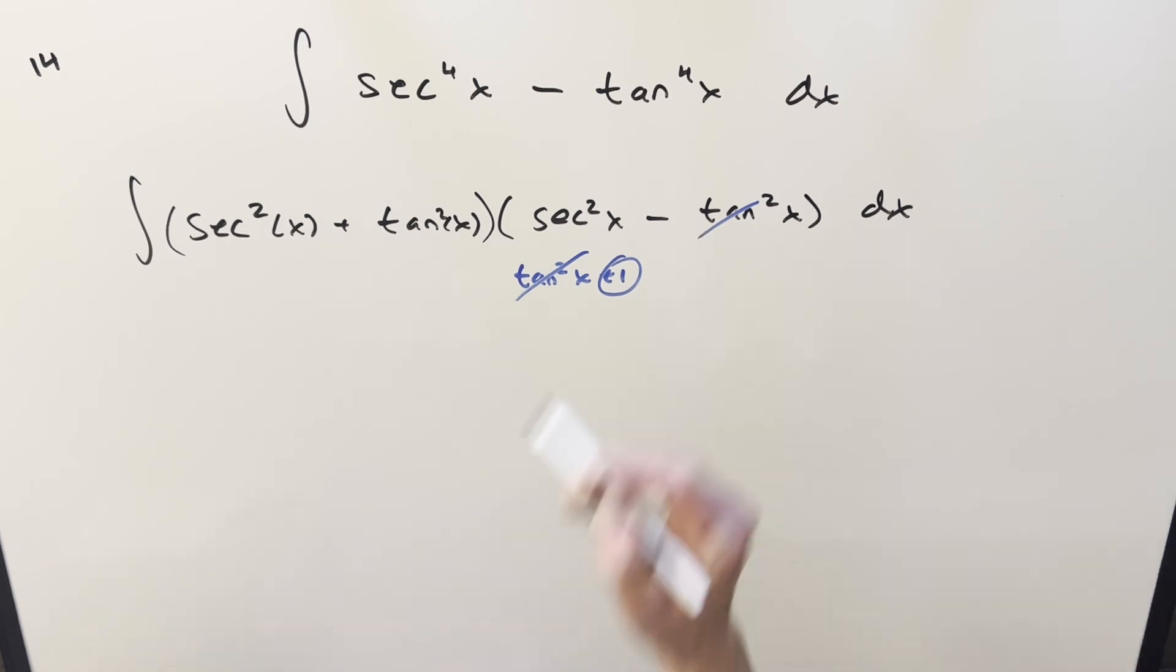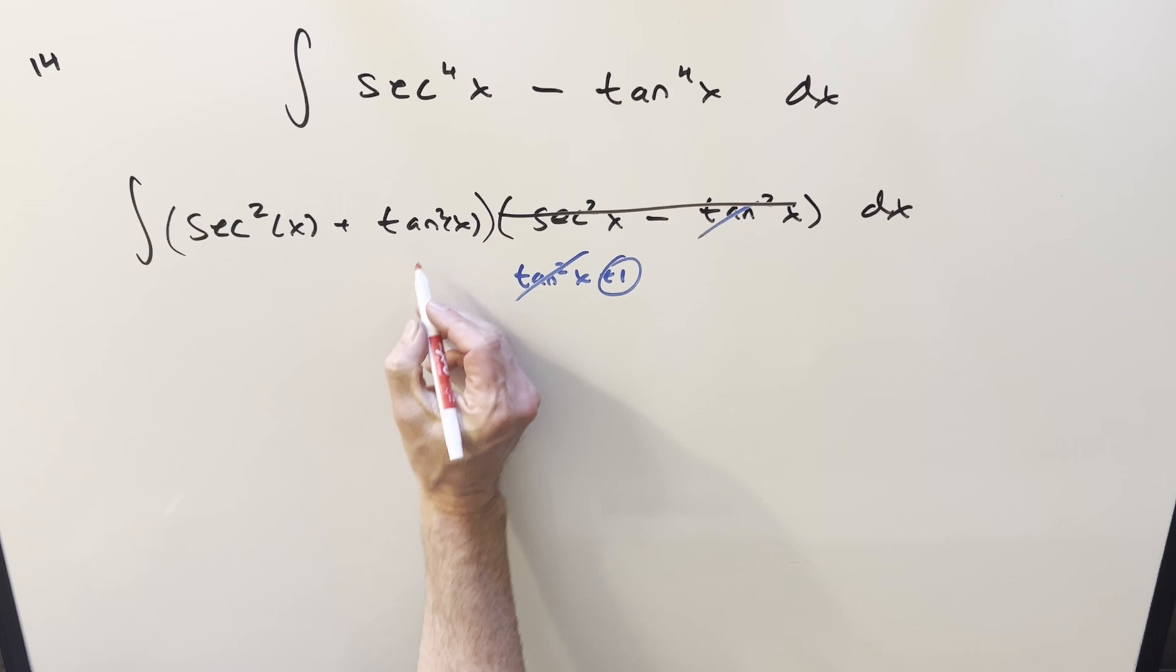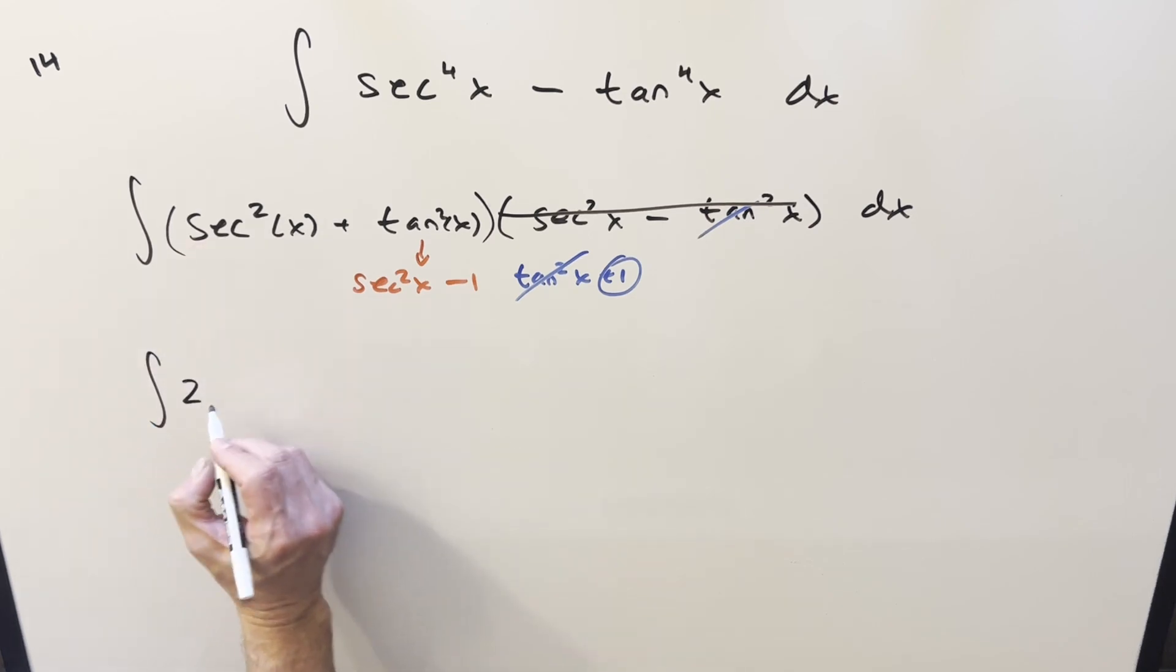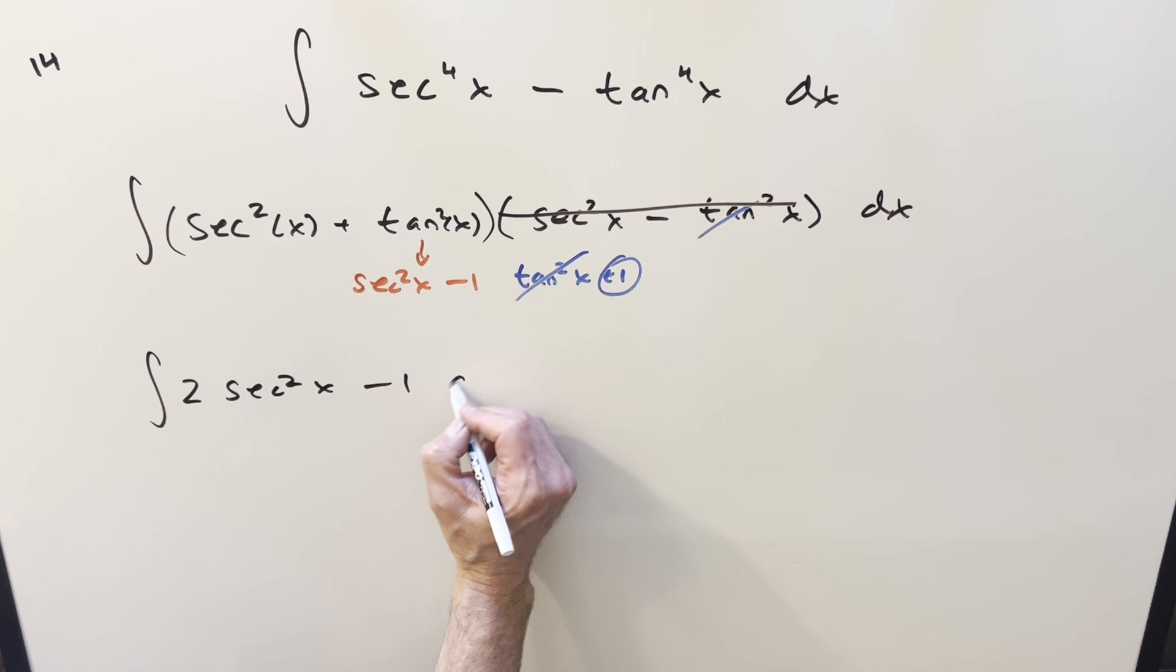So if we're just multiplying by 1, this whole part here can be ignored. But then here on what's left, I want to use this same thing, just rearranged a different way. If tan squared x plus 1 is secant squared, then I can say tan squared x is the same thing as secant squared x minus 1. So adding this to this, what we're left with is 2 secant squared x minus 1 dx.